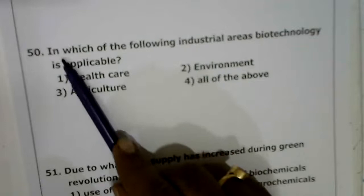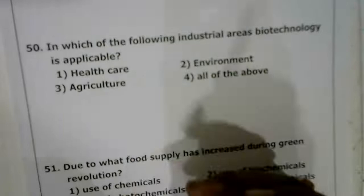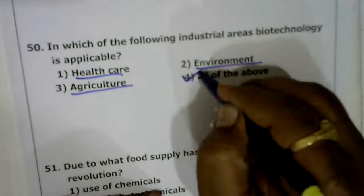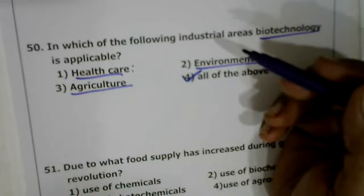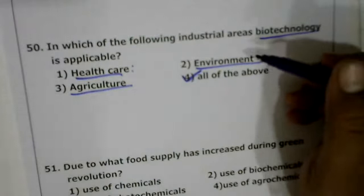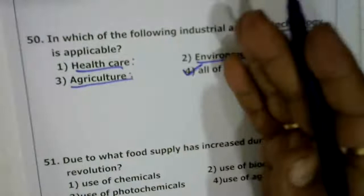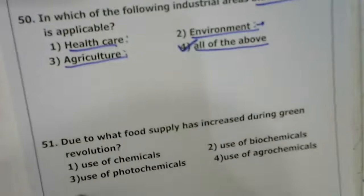Next: in which industrial areas is biotechnology applicable? Biotechnology is applied in healthcare by producing nutritional quality products, in the environment to develop microorganisms that kill water pollutants and reduce toxic contamination, and in agriculture through Bt cotton, Bt brinjal, tomato, and golden rice. So biotechnology is applicable in all fields — healthcare, environment, and agriculture.